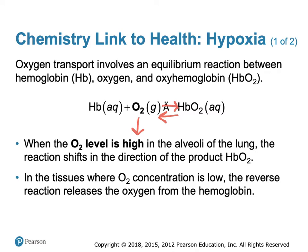To restate this important biochemical connection: when we have active tissue that needs oxygen, it is low in oxygen, which essentially means we are removing one of the reactants. In order to relieve the stress on the system, oxyhemoglobin will release oxygen, forming hemoglobin and oxygen, and that oxygen can then be taken up by the tissues that need it.